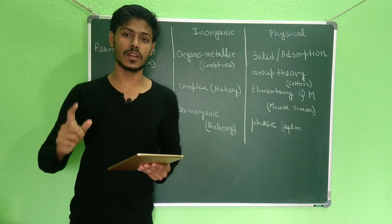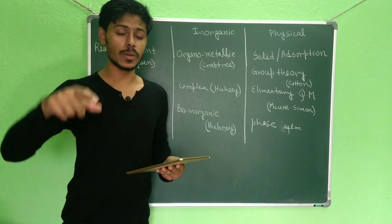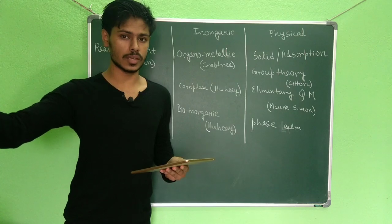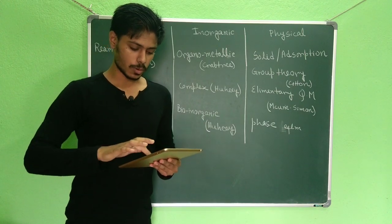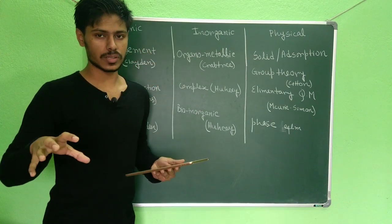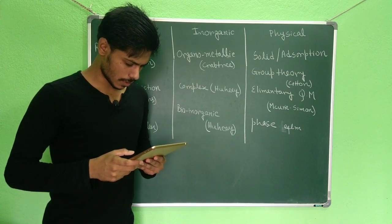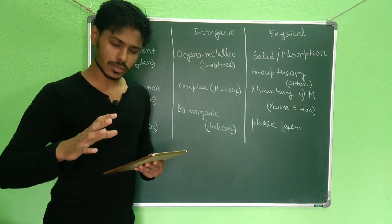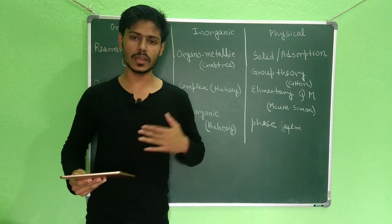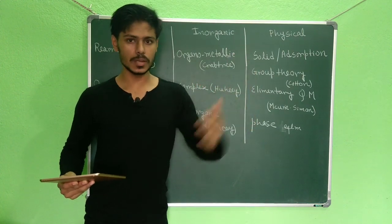The fifth point is: make a formula sheet for physical chemistry. This is very important because it will help you in the final week or a few days before the exam. In physical chemistry, a lot of numerical questions are asked in the CSIR NET and other competitive exams. The sixth point is: practice as many questions as possible from organic chemistry.